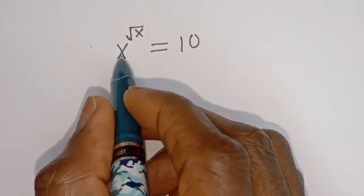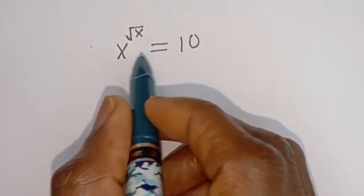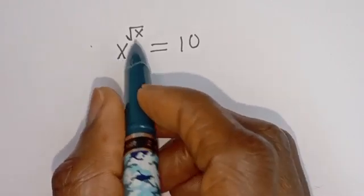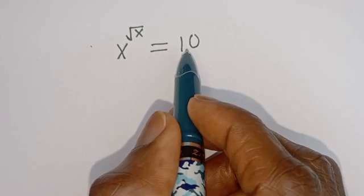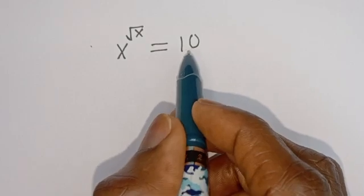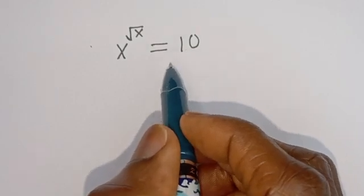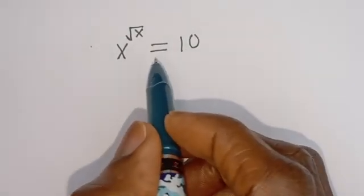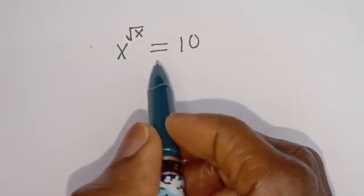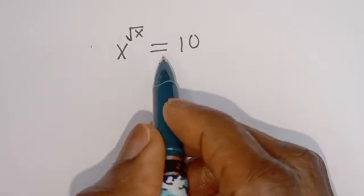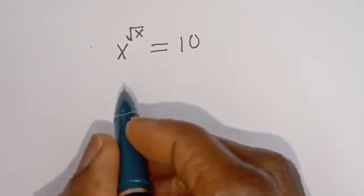Hello, how to solve for s in this equation: s to the power of square root of s is equal to 10. But before we proceed, please don't forget to like, share, comment and subscribe.